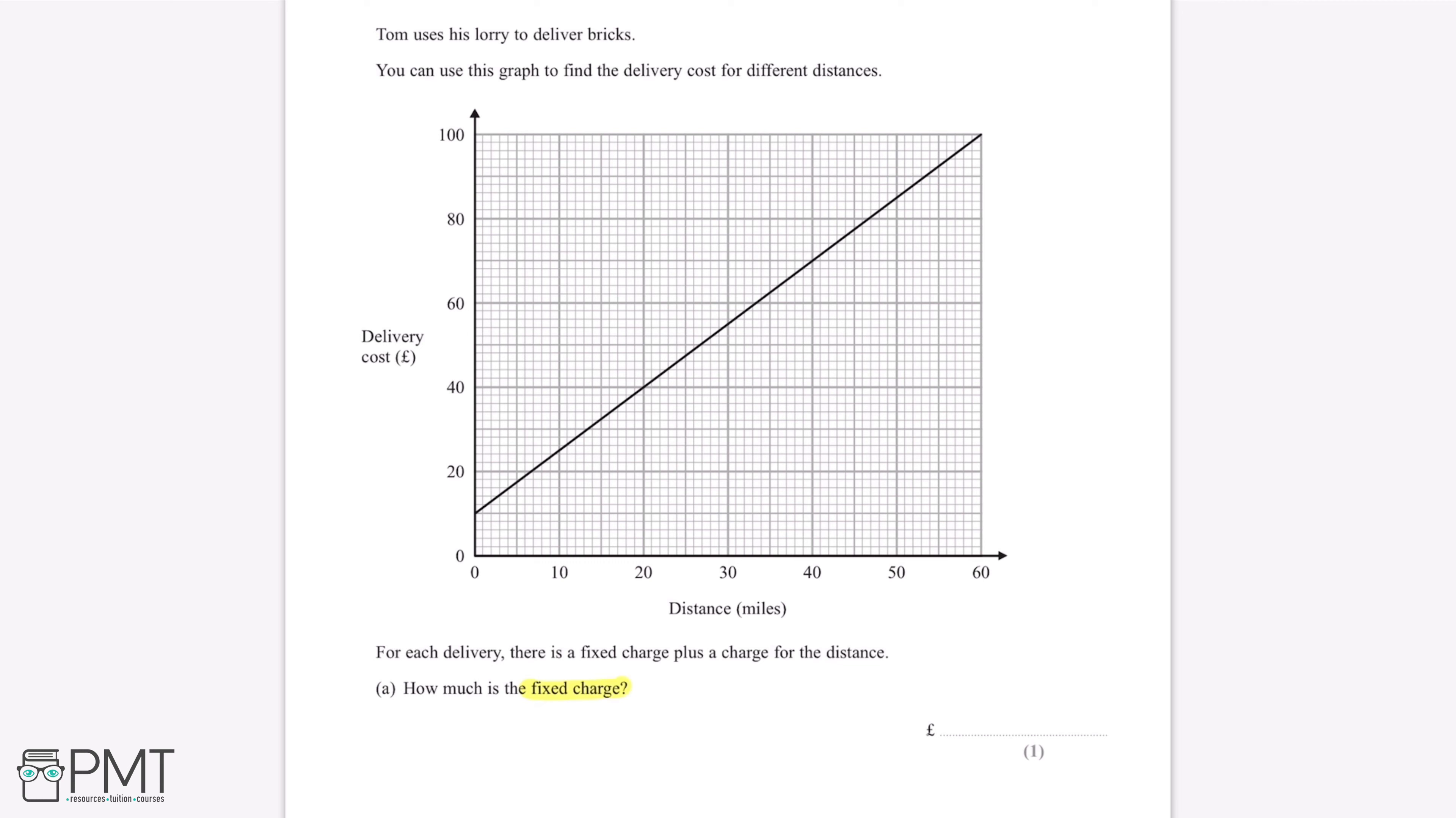A fixed charge is a price which you have to pay no matter what distance you're traveling, so it's the price that anybody will pay before the price for the distance traveled is added. In order to work out what the fixed charge is, we'll need to look on this graph and we're going to want to look at where the distance is equal to zero, which is here.